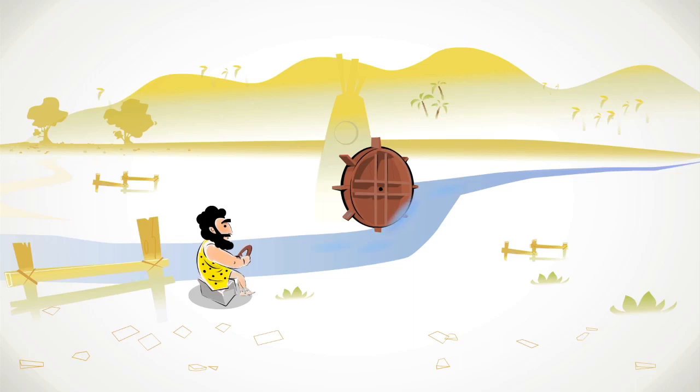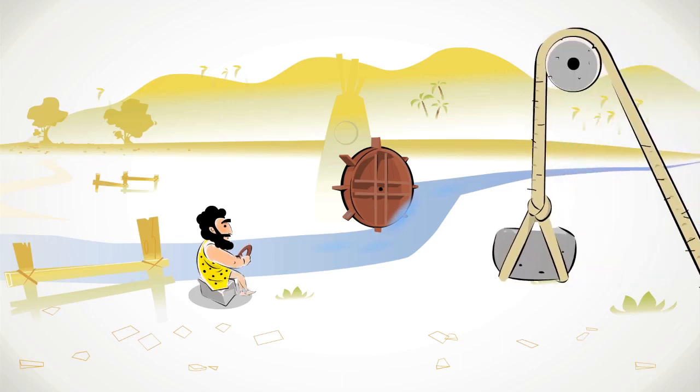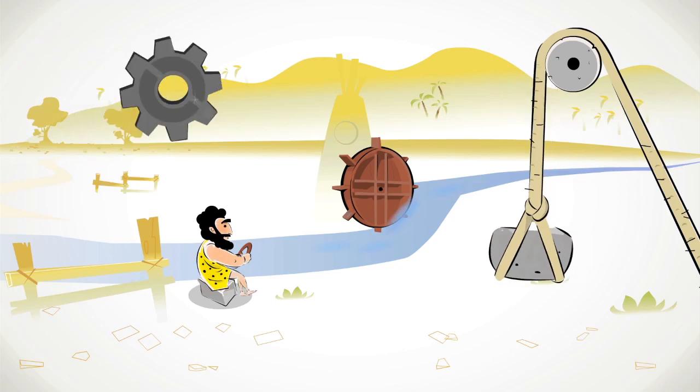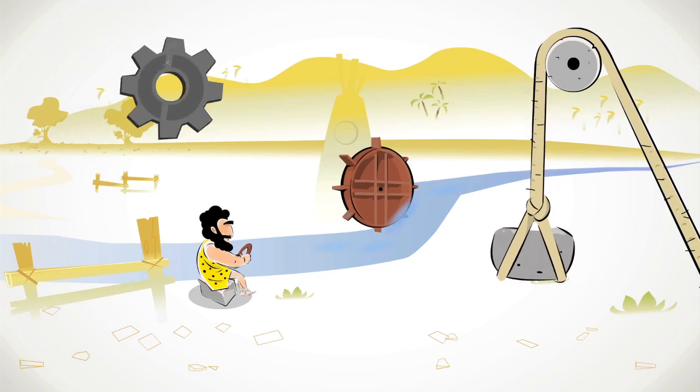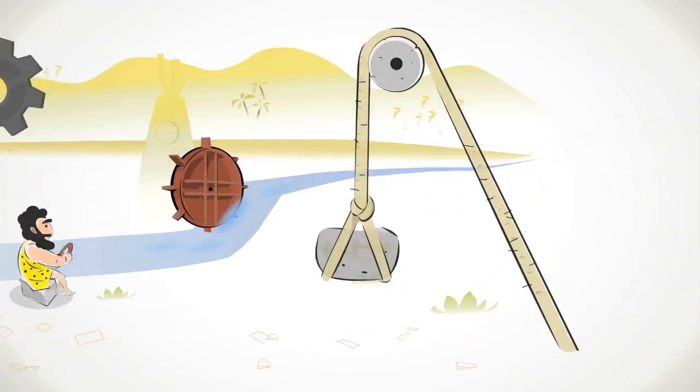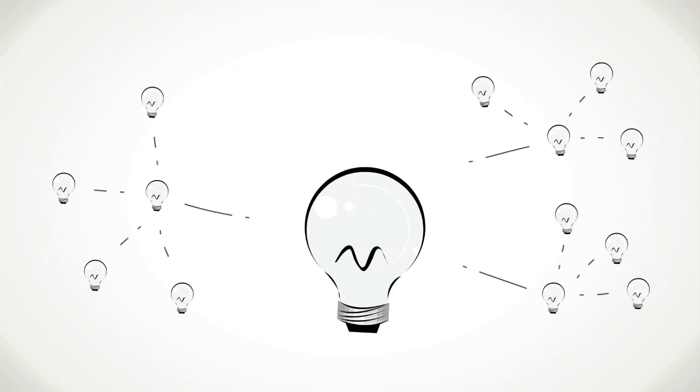Either way, it is clear that the wheel has found countless practical applications. The windlass, a simple machine used to lift weights. The water wheel and the cog are all examples of innovative uses of the original concept. Some of them, such as the bearing, are technological breakthroughs in their own right, facilitating further improvements and innovations.